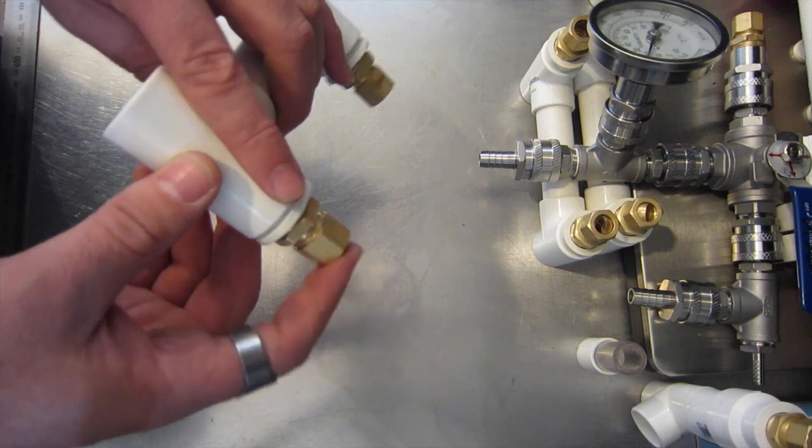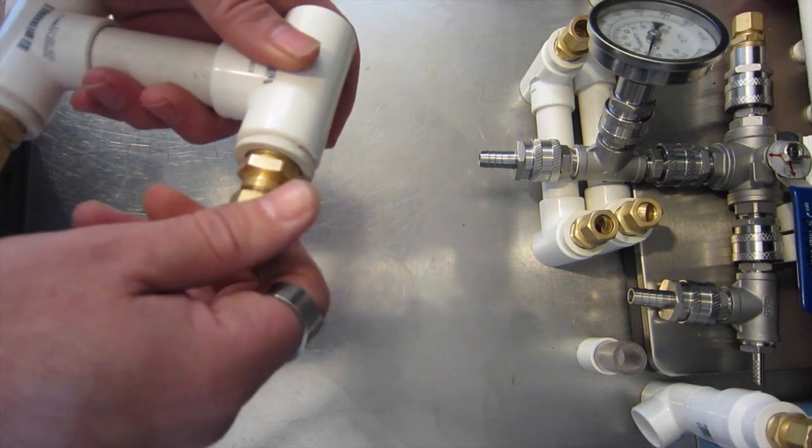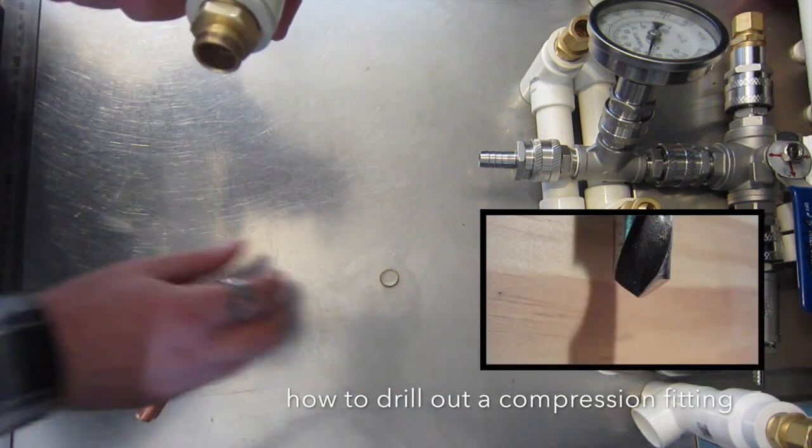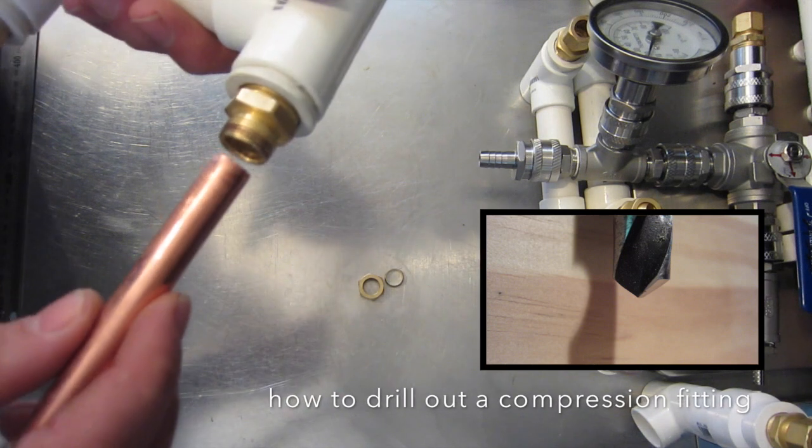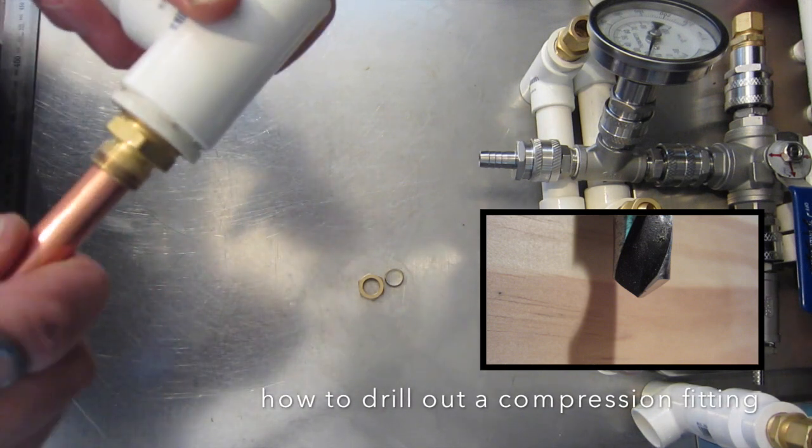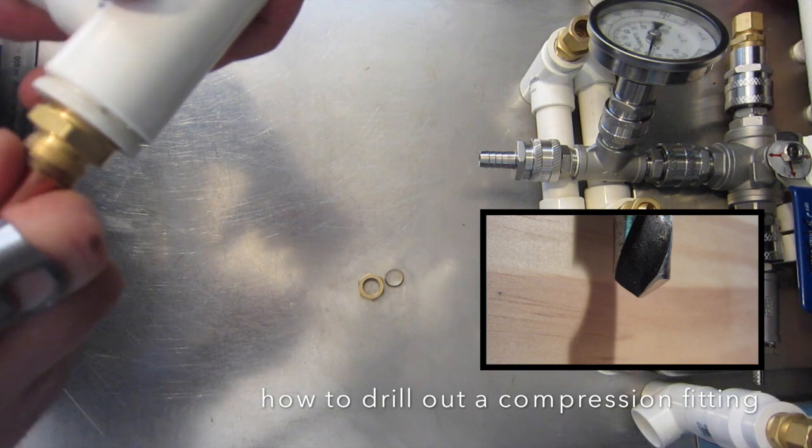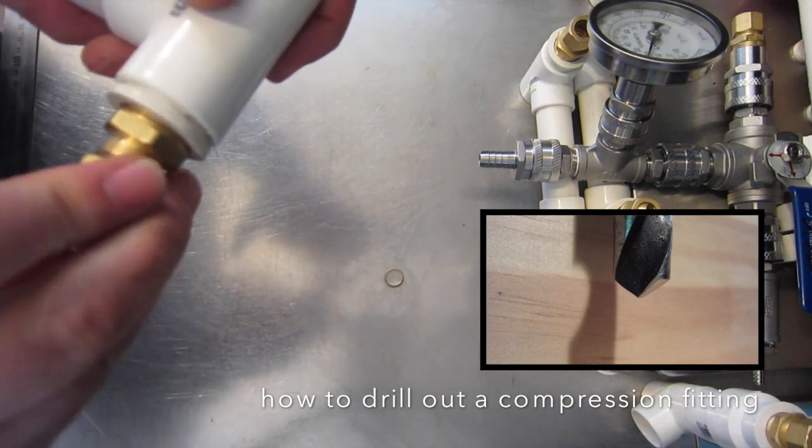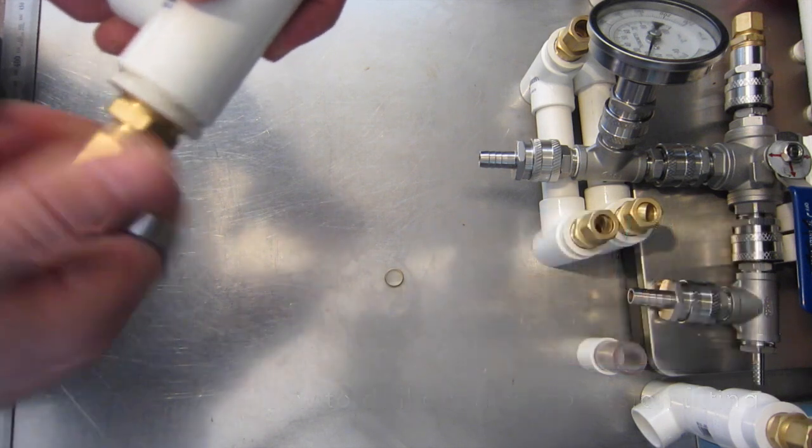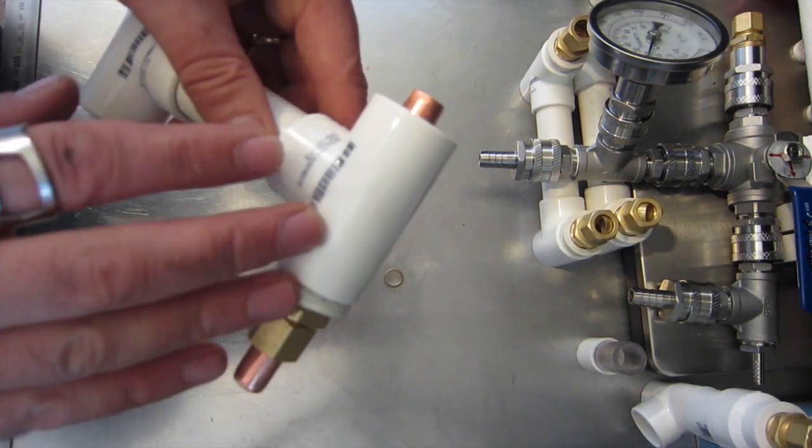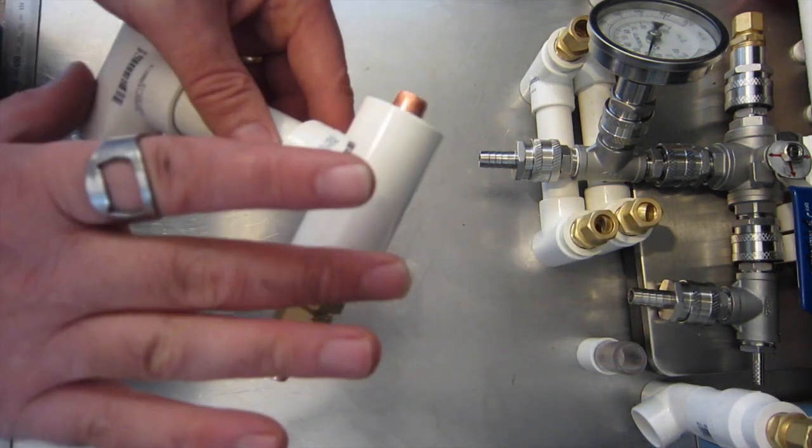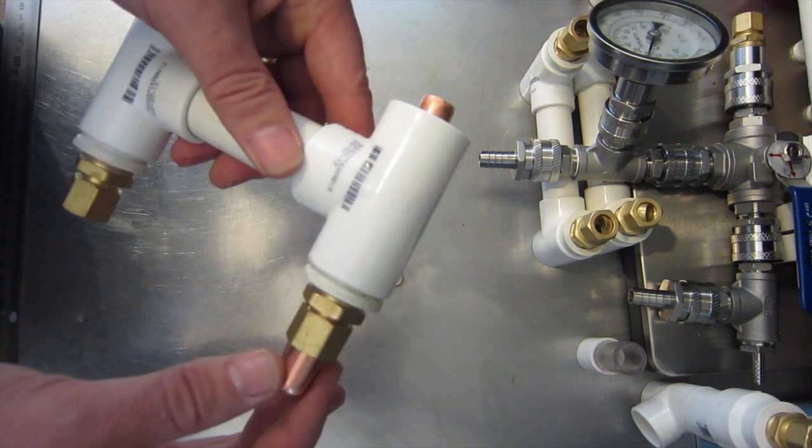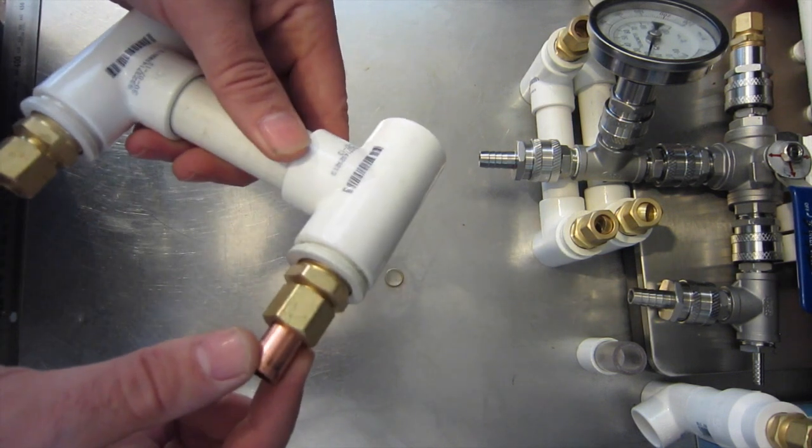This compression fitting here I have drilled out so that a copper pipe can pass all the way through. Let's just put the cap back on - we won't put the ferrule on and tighten it up because we don't want this one to stay there. This is just a small piece of copper pipe, just an end piece to show you the theory behind it.